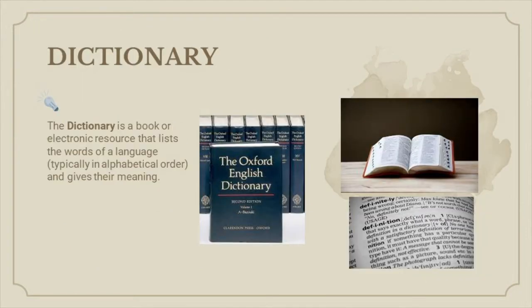The dictionary helps us by giving us meaning and words we are looking for. It tells us how to pronounce the word and the correct spelling. The dictionary entries are found in alphabetical order.